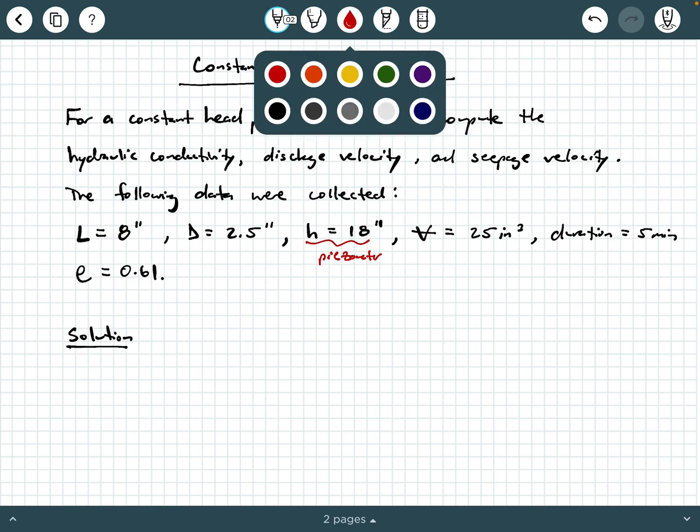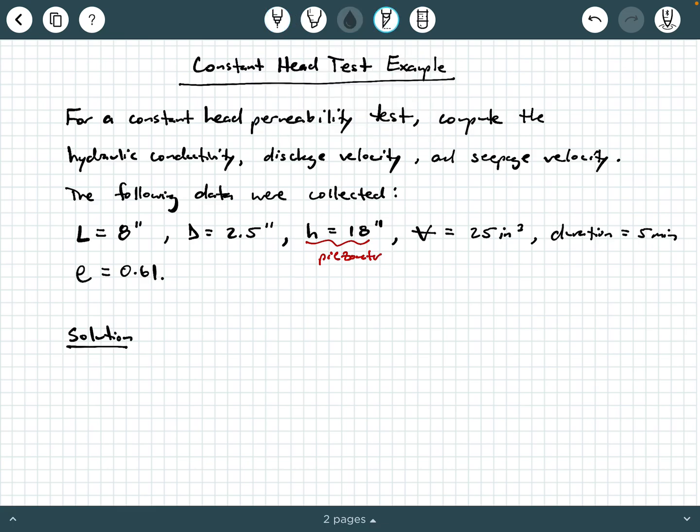And the total volume of water collected during the duration of the test was 25 cubic inches. So this came out of the outlet in a flask of some sort, and that was collected over a five minute duration. And we also know that the void ratio of the soil specimen was 0.61.